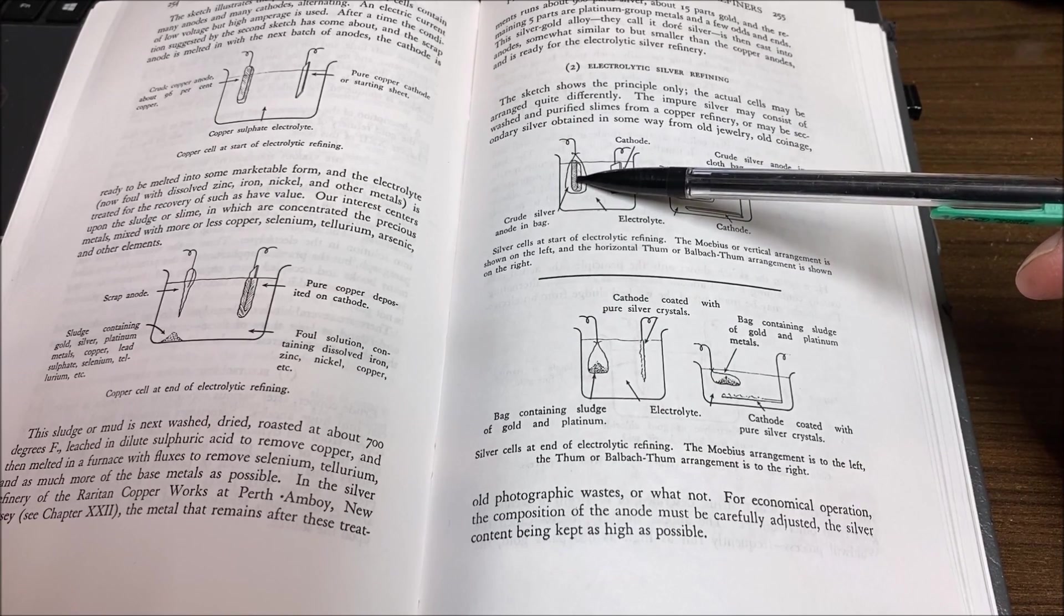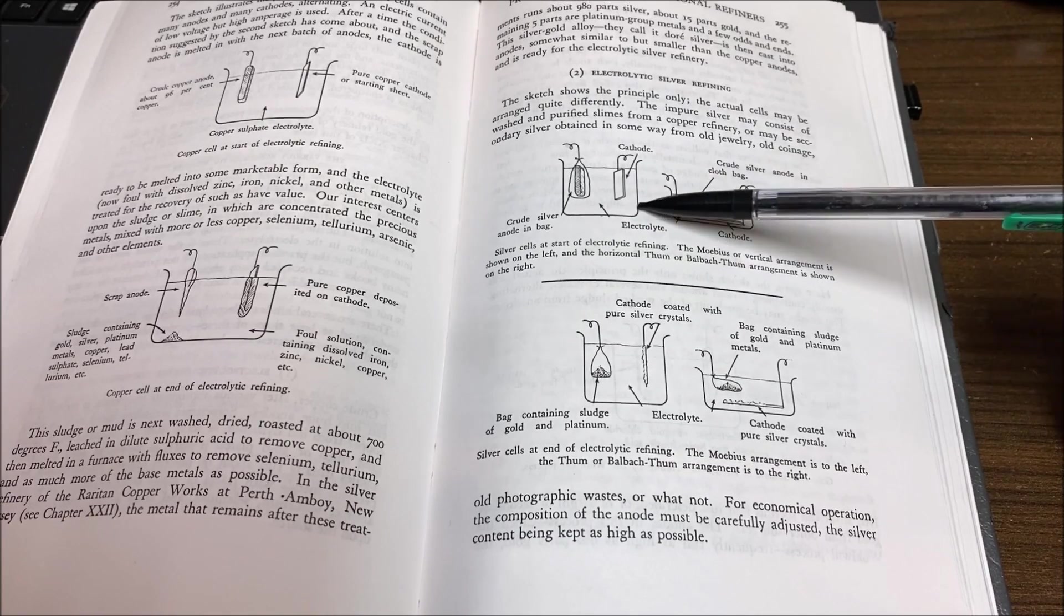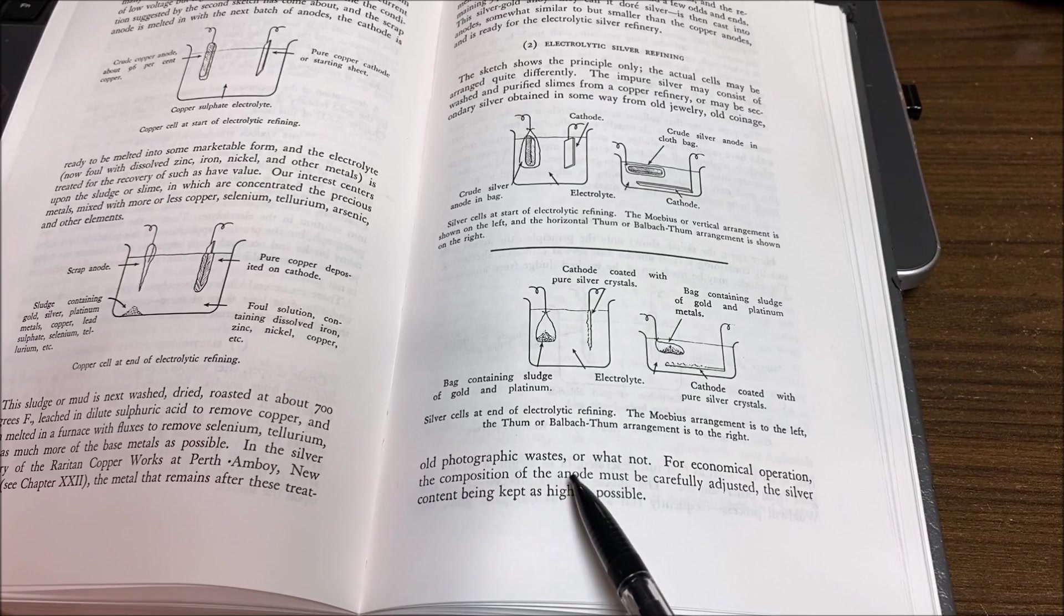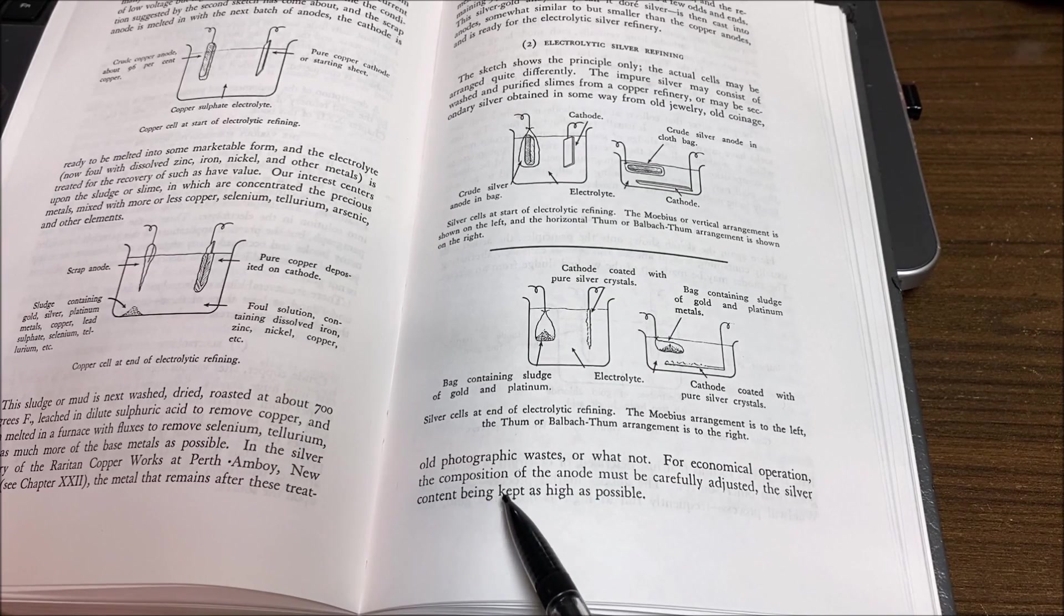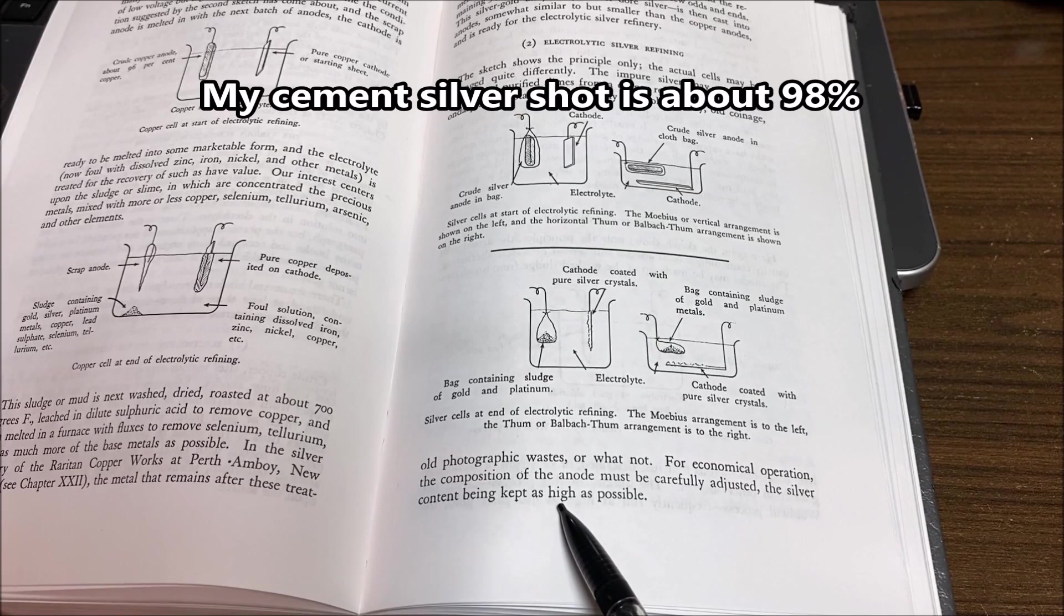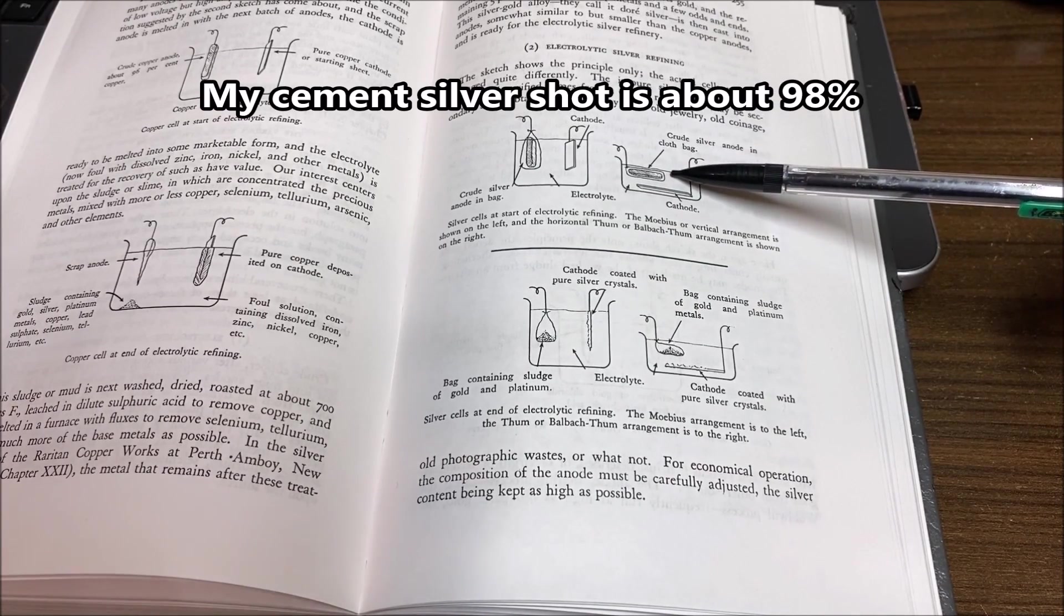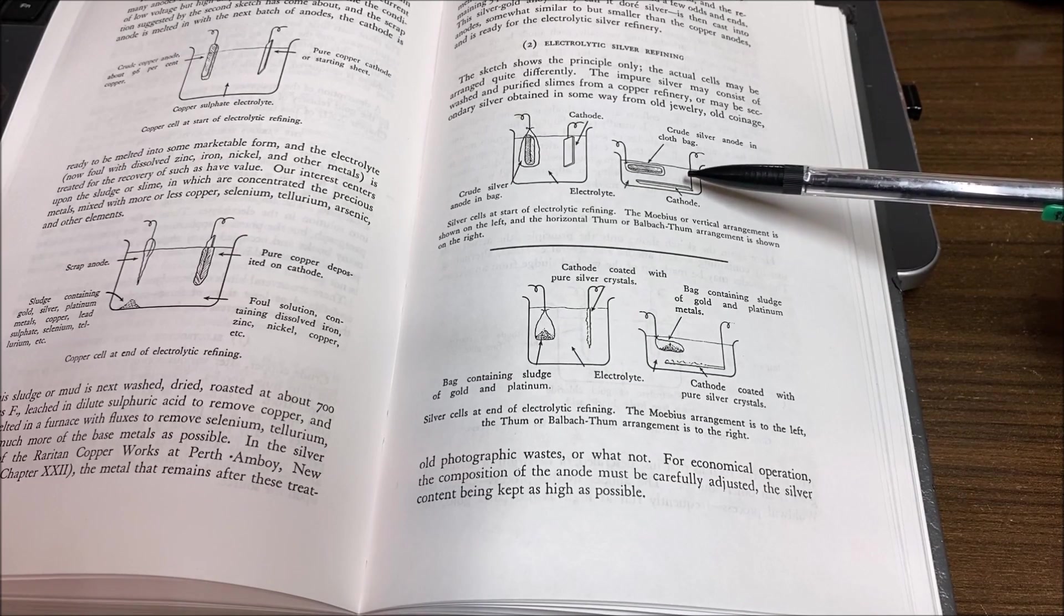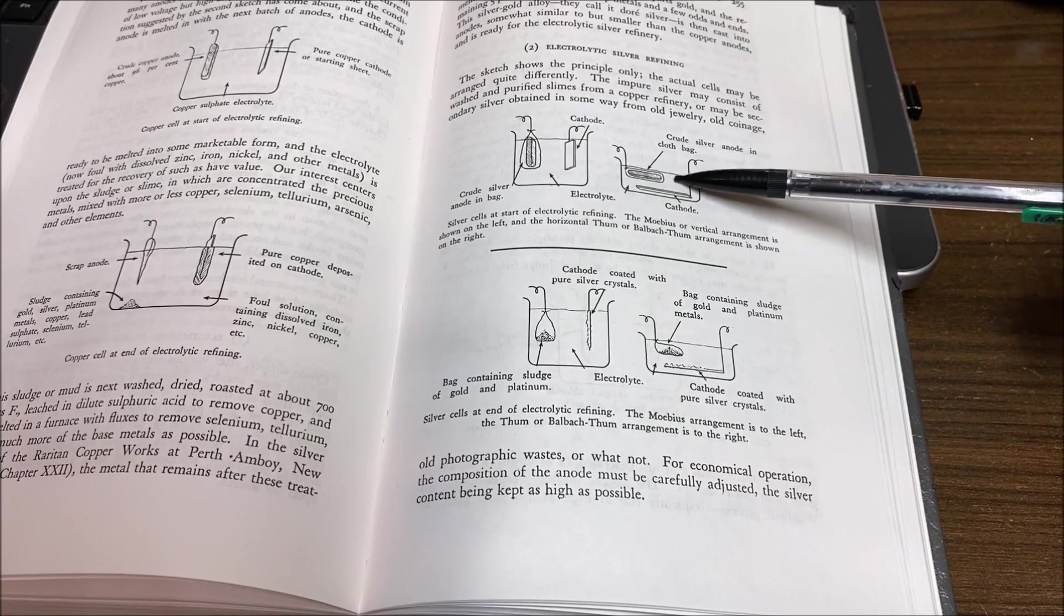The other arrangement is called the Mobius or vertical cell where they're horizontally opposed. The anode is hung in the cell on this side, the cathode is opposed to it on the other side of the cell, and the electrolyte in both of these is made out of silver nitrate. But down here if you look it says that for economical operation, the composition of the anode - the impure silver that goes in the top in the anode basket - must be carefully adjusted. The silver being kept as high as possible. In other words, the purity of the anode should be fairly pure to begin with. You can't use highly impure silver in the anode. It'll foul the electrolyte and the silver won't come out right. Some of the contamination will begin to plate out with the pure silver crystal after the contamination gets excessive in the electrolyte.